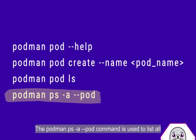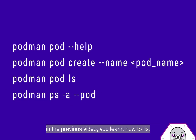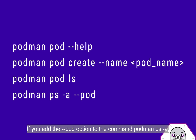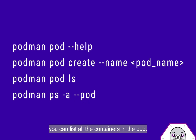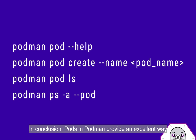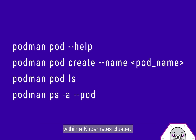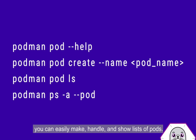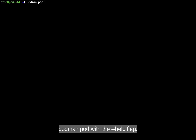The podman ps -a --pod command is used to list all the containers in a pod. You may remember that in the previous video you learned how to list all containers in the system using Podman. If you add the option --pod to the command podman ps -a, you can list all the containers in the pod. In conclusion, pods in Podman provide an excellent way of managing containers and scaling applications within a Kubernetes cluster. With Podman commands you can easily create, manage, and list pods.